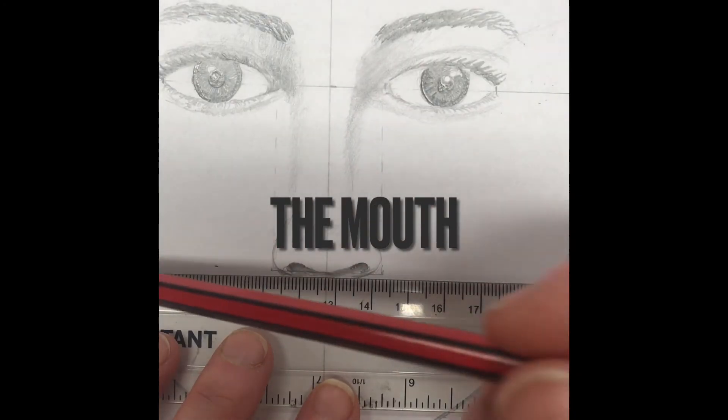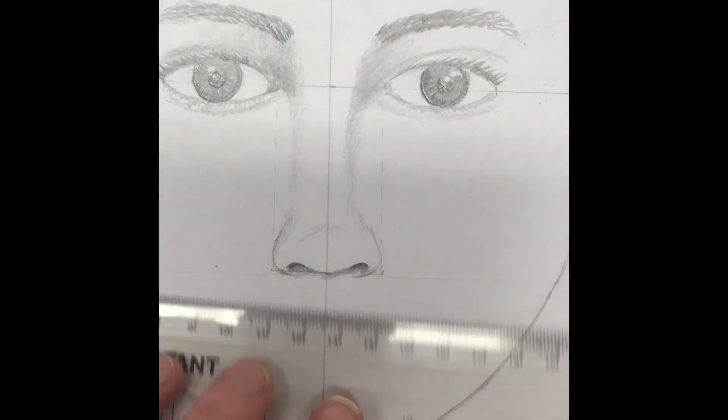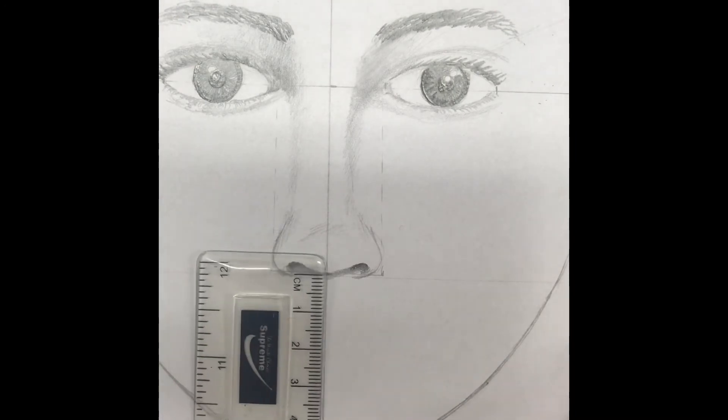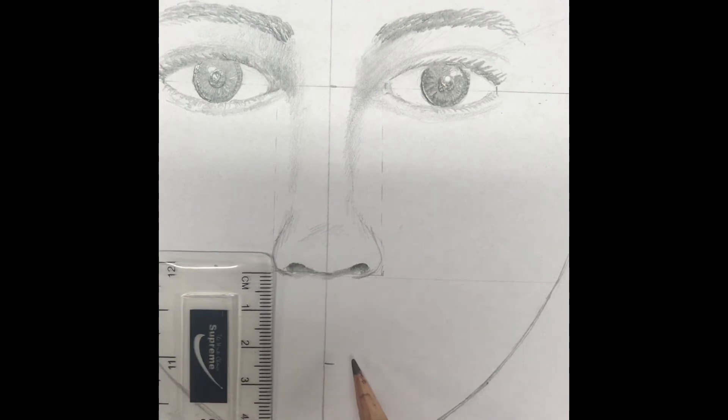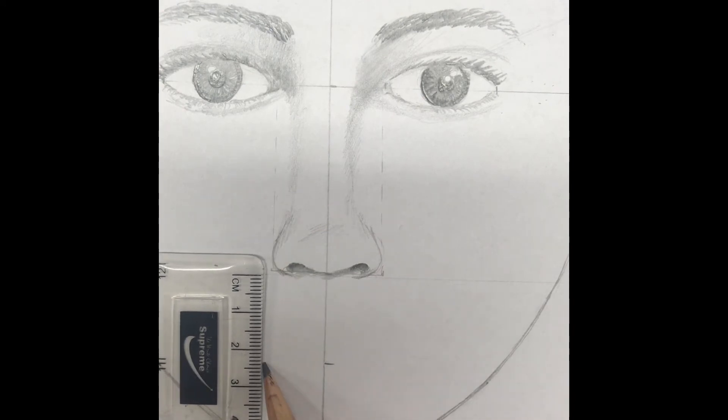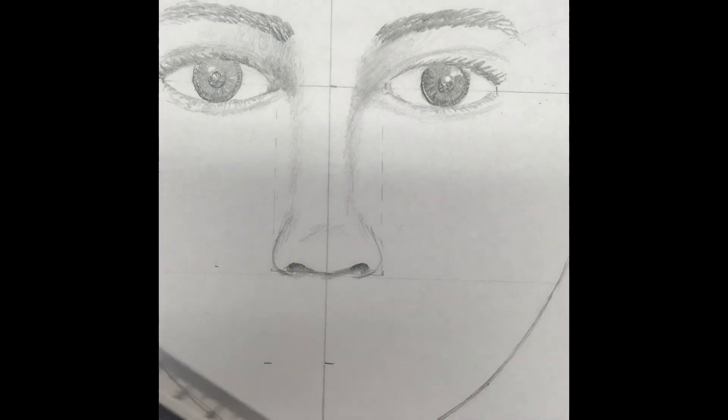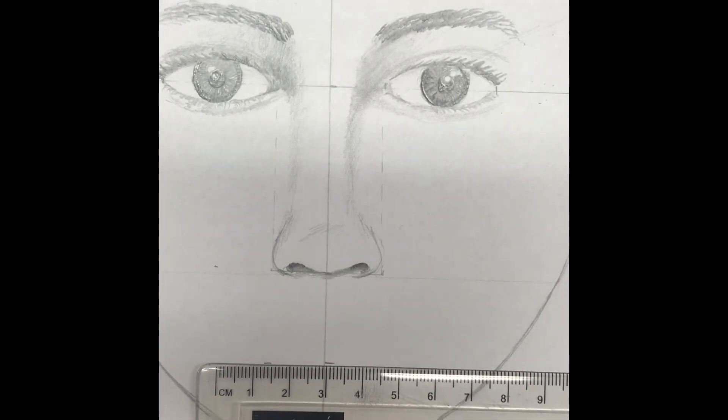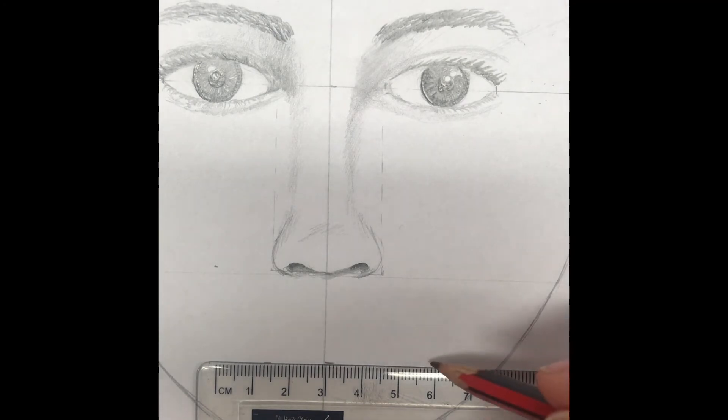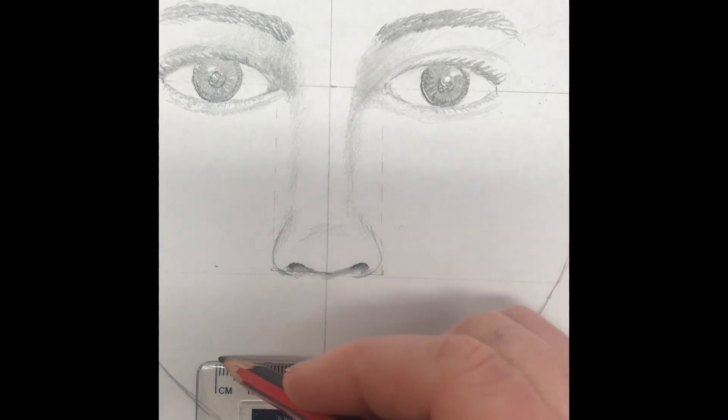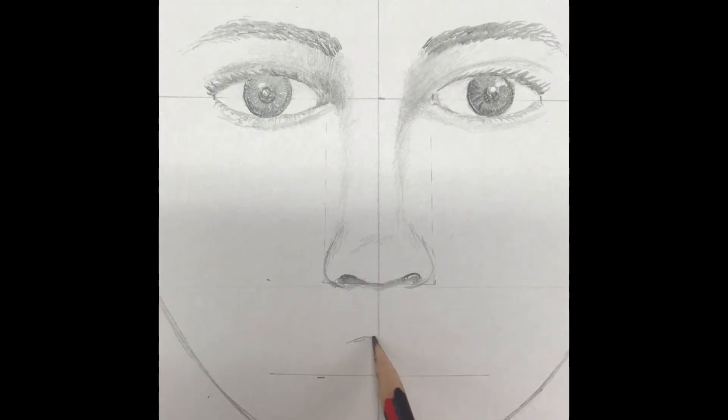When drawing the mouth, measure 2.5 centimeters down from the nose. The mouth should be approximately 6 centimeters, the width of 2 eyes, and should go from the middle of each eye.